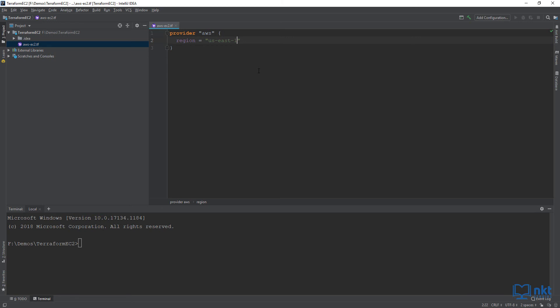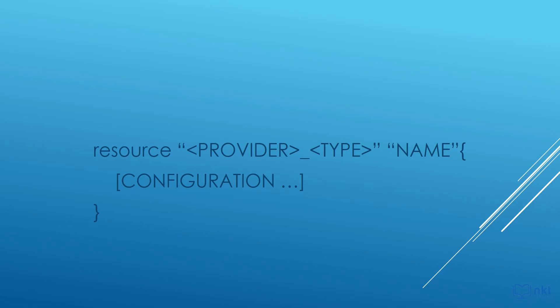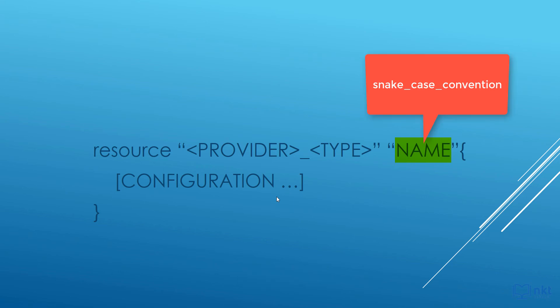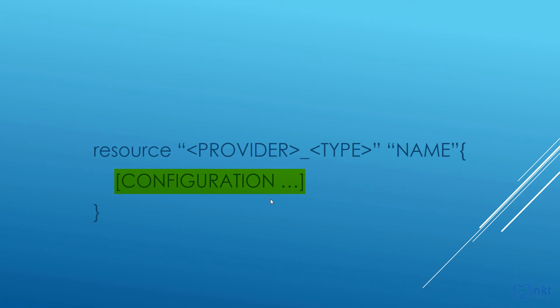The general syntax for creating a resource in Terraform is as follows: resource, provider type, name, and then configuration. The provider is the name of the provider — for example, AWS. Type is the type of resource to create in that provider — for example, aws_instance for an EC2 instance. Name is an identifier you can use throughout the Terraform code to refer to this resource — for example, my_ec2. It should be in snake case convention, that is lowercase words separated by underscores. Configuration are the different options you can set for that particular resource — for example, for an EC2 instance, configuration includes things like the AMI and the instance type. For an S3 bucket, it includes things like the bucket name and encryption.